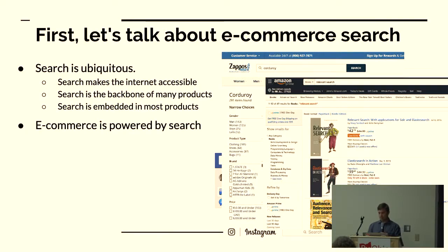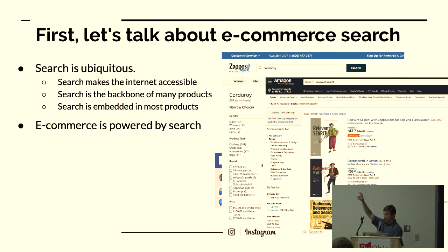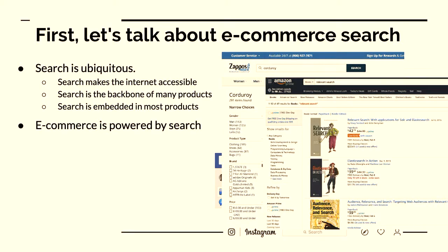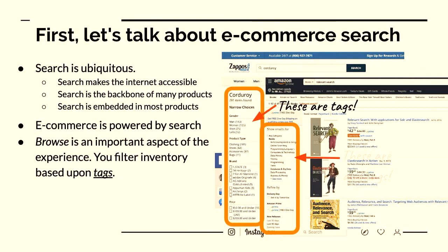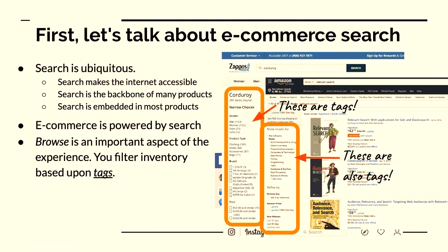In e-commerce, search is right in your face — you know you're using a search engine. Zappos and Amazon are good examples. You type words at the top, and on the side you have facets. Faceted search allows you to slice and dice the data set. In terms of Zappos, you've got clothing type, sizes, prices — these are all tags. They're little tidbits of metadata attached to products so you can do interesting things with them, understand your inventory, and let users explore it.